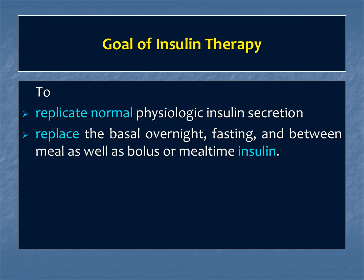The second goal is to replace both the basal — overnight, fasting, and between-meal insulin — as well as the bolus or mealtime insulin. We want to replace insulin at all times throughout the day, 24 hours, and accordingly maintain the level.